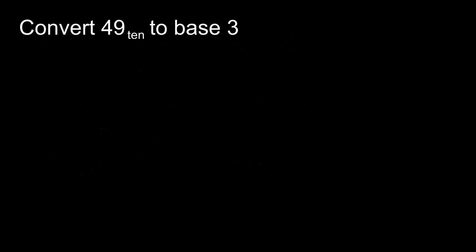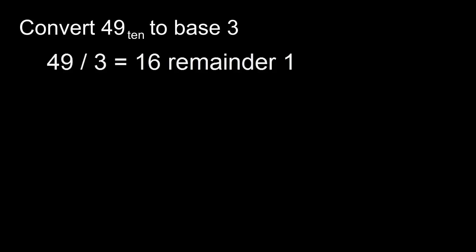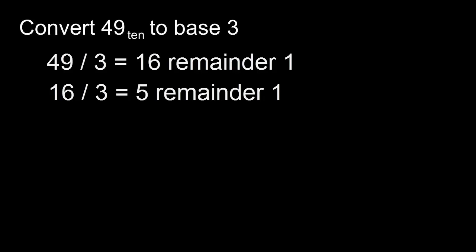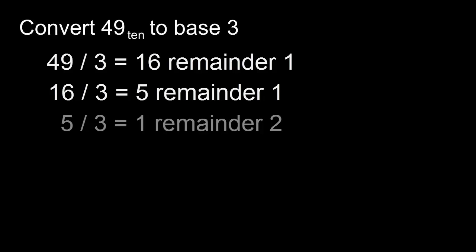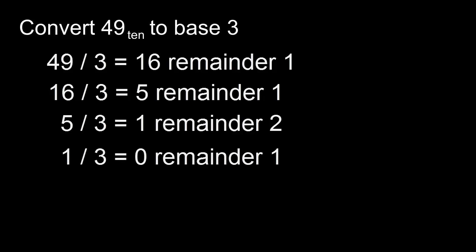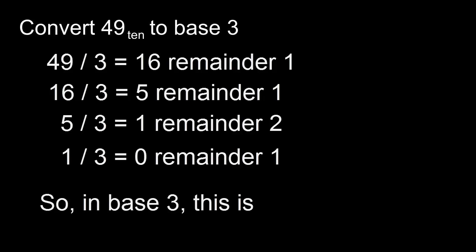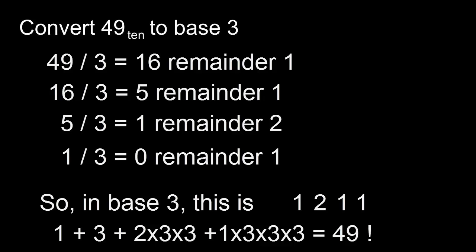Let's look at converting from base ten to another base. Here's an example: forty-nine base ten to base three. We take forty-nine and divide by three — we get sixteen, remainder one. Take the sixteen, divide by three — we get five, remainder one. Take the five, divide by three — we get one, remainder two. Take the one, divide by three — and we get zero, remainder one. We keep on going until we find a zero. So in base three this will be one, two, one, one. Let's check: from the right, one, plus one lot of three, plus two lots of three times three, plus one lot of three times three times three — that is forty-nine.